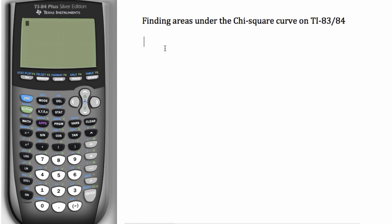When we want to find an area under the curve, we go to distribution, which is second VARS, or distribution.